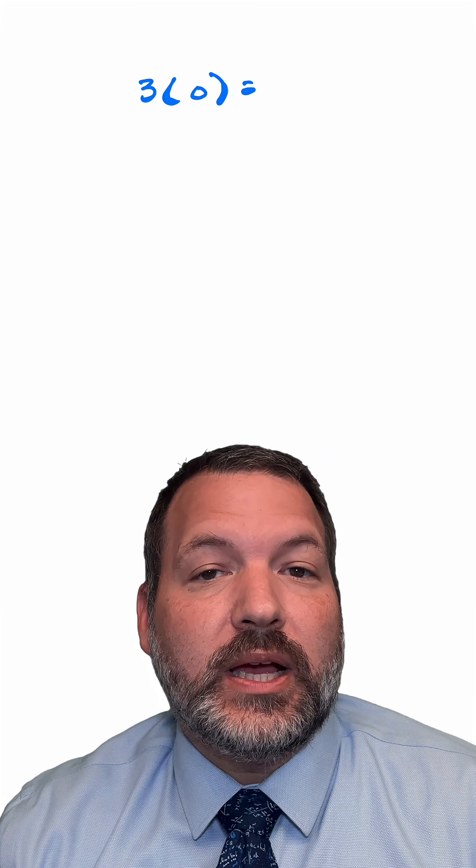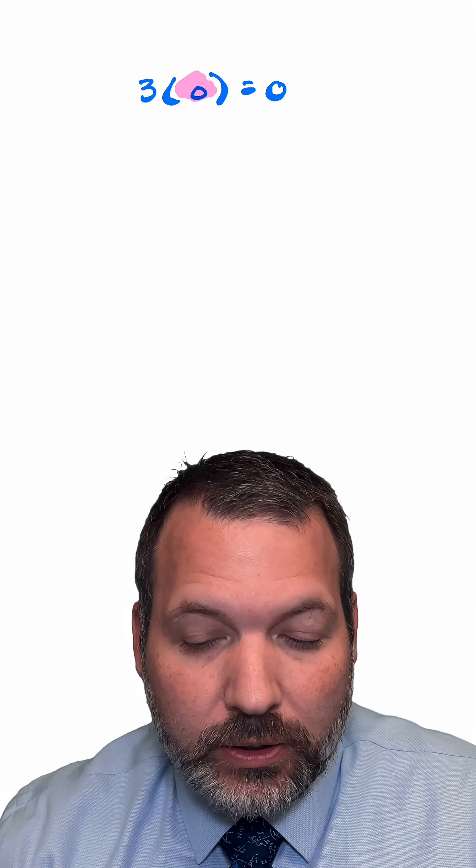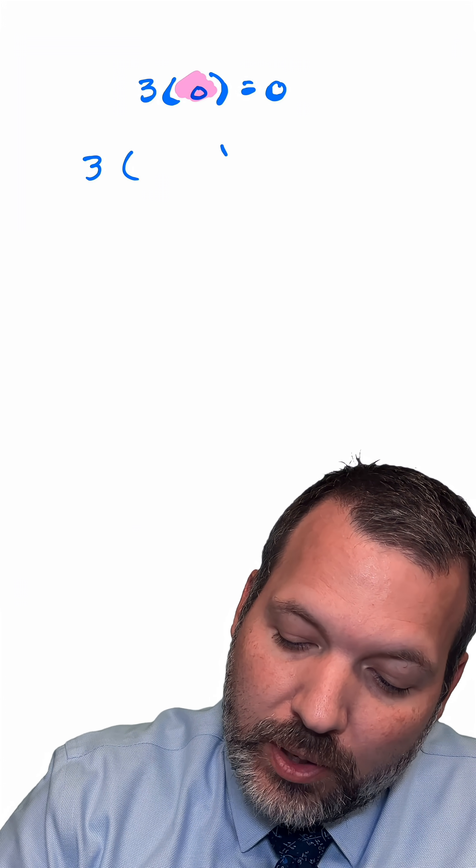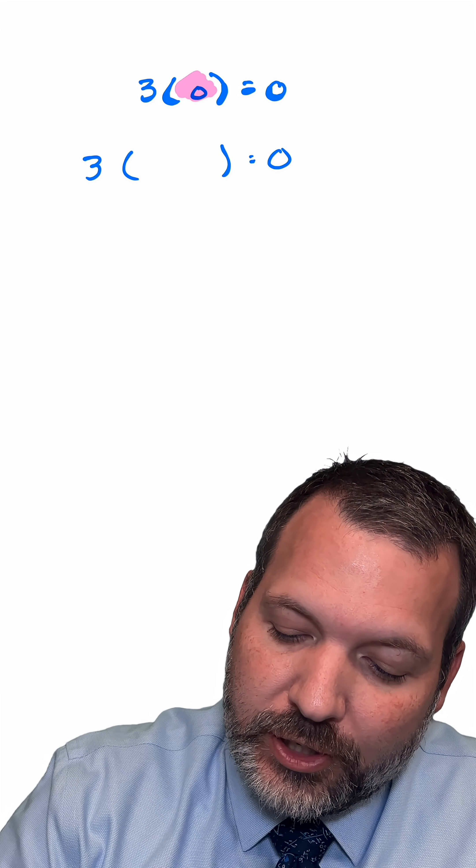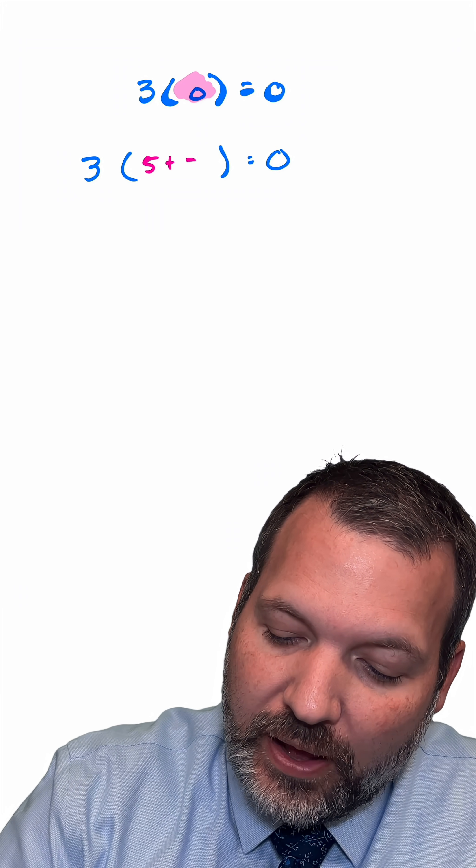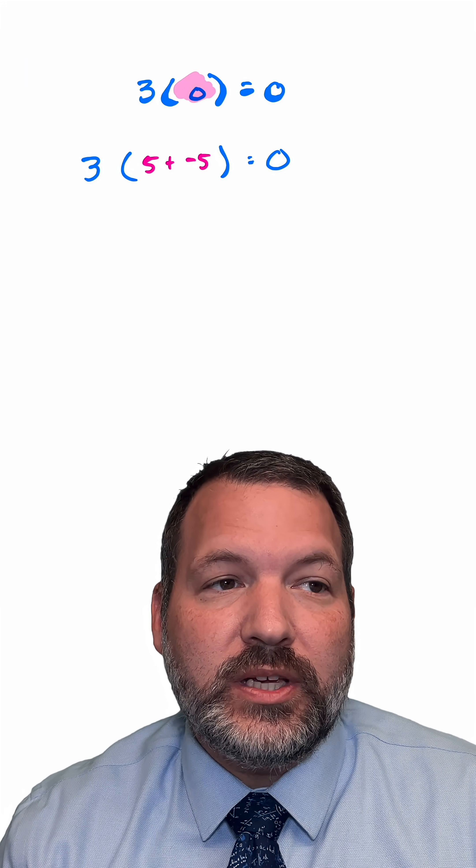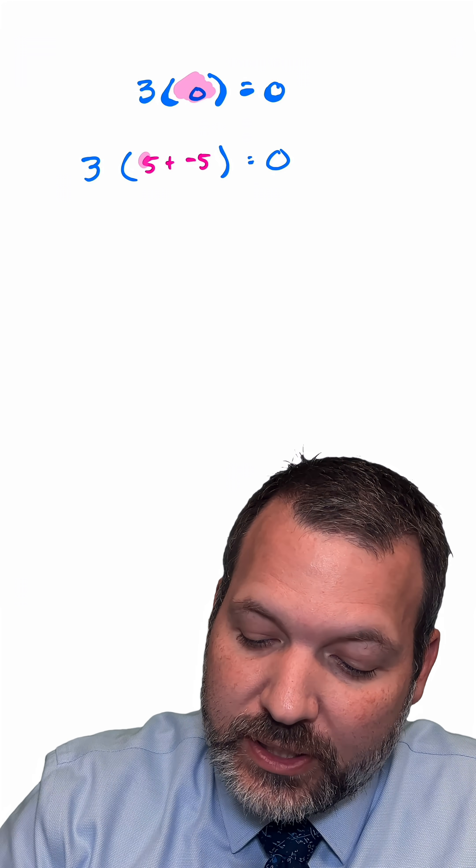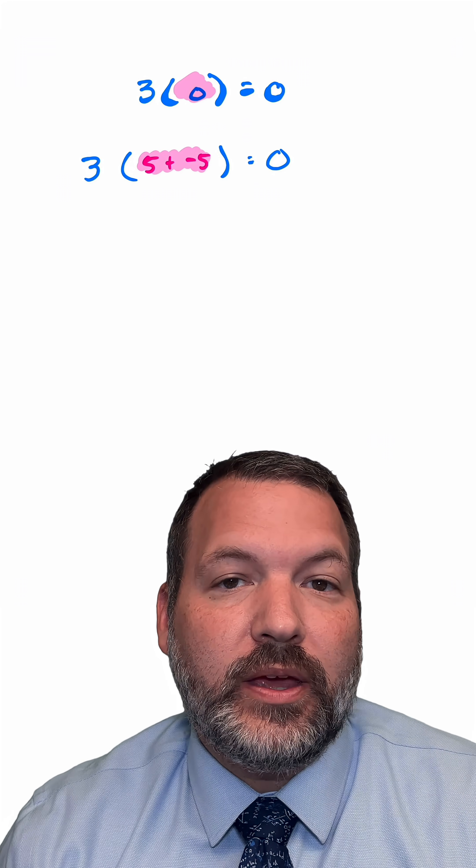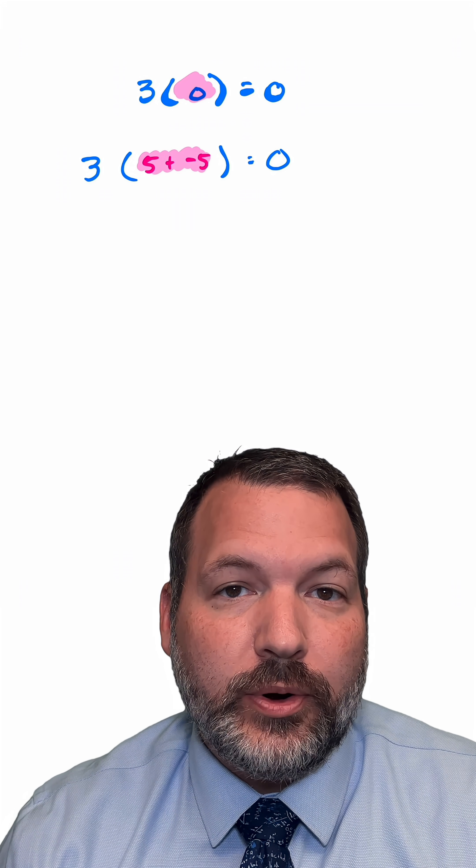Let's start with something simple that we probably all agree on. What is 3 times 0? 0, right? Fair enough. What if I decide to take the inside of those parentheses, and it's still going to be equal to 0, but I am going to rewrite it slightly. I'm actually going to write it as positive 5 plus negative 5. Do you agree positive 5 plus negative 5 is 0? Hopefully you do, and so you can see that I haven't really changed anything. This should still be equal to 0.